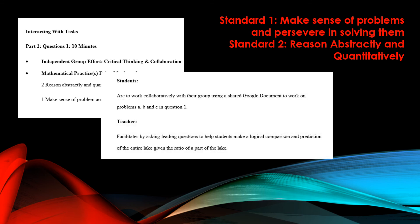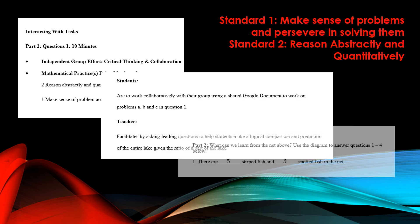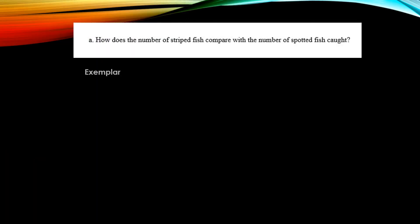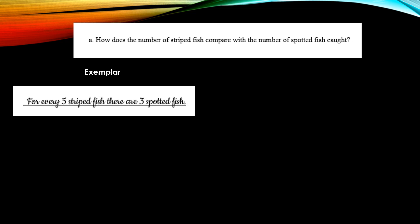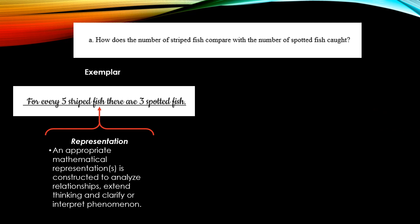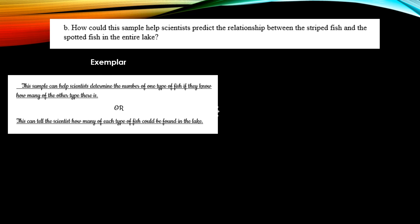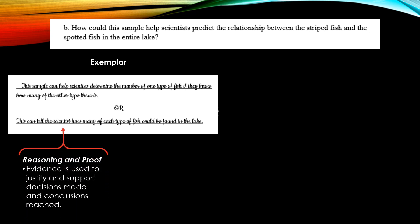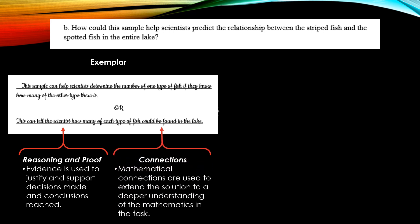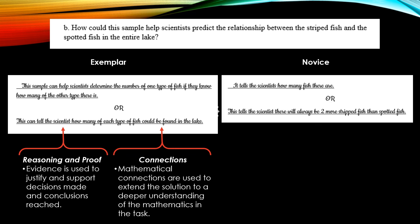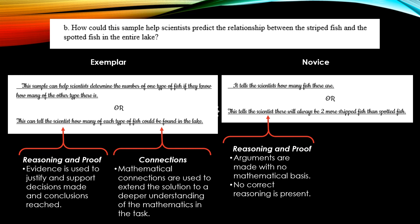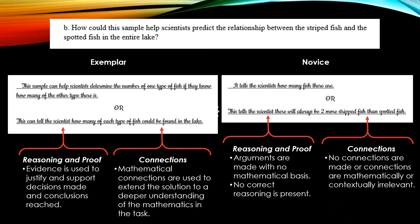For question one, we will look at the Google document to gather information. In the exemplar's response, the student is able to make appropriate mathematical representation, whereas in the novice's response, there is no attempt made. For part B, the exemplary student is able to provide evidence to justify decisions and support conclusions, as well as make the necessary mathematical connections. In the novice's response, there is no mathematical basis for arguments made and connections made are mathematically incorrect.